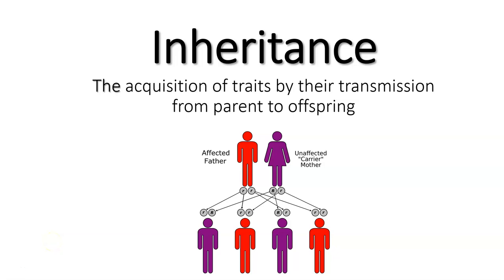This lecture will cover inheritance — specifically how we acquire genes and how you can decipher how genes are going to be split from one parent to the next. This picture shows a disease example in which you have an affected father and a mother who's a carrier. We'll talk about what these genomes are called and how that can affect their offspring.